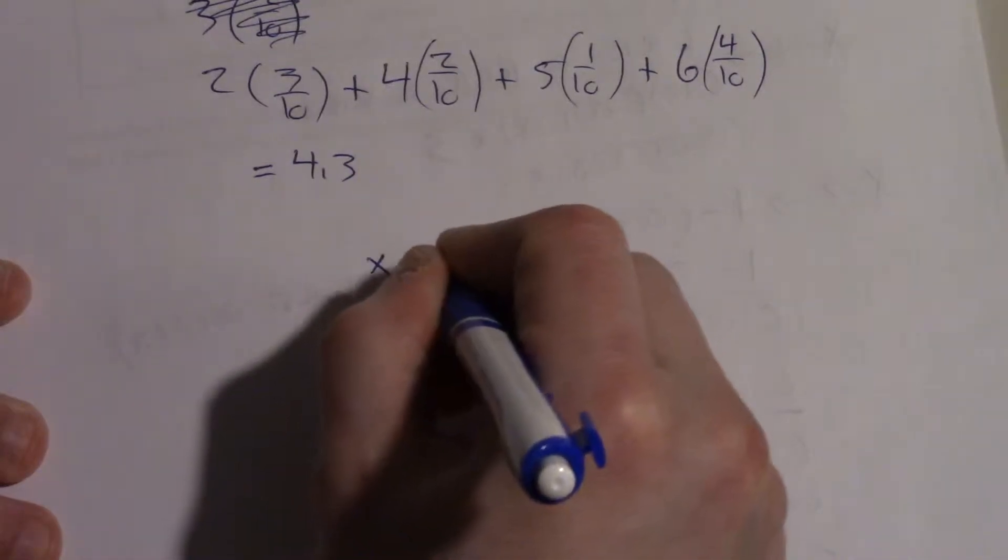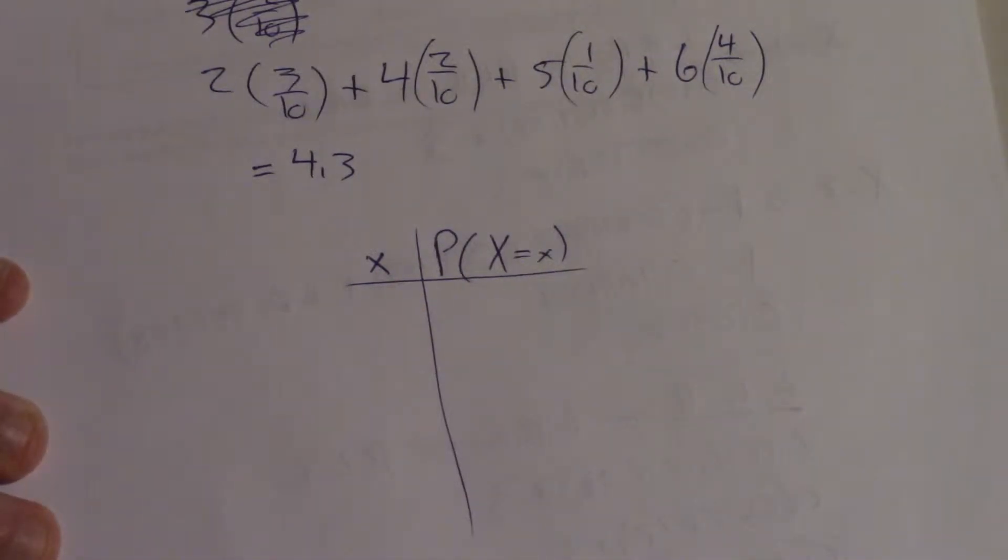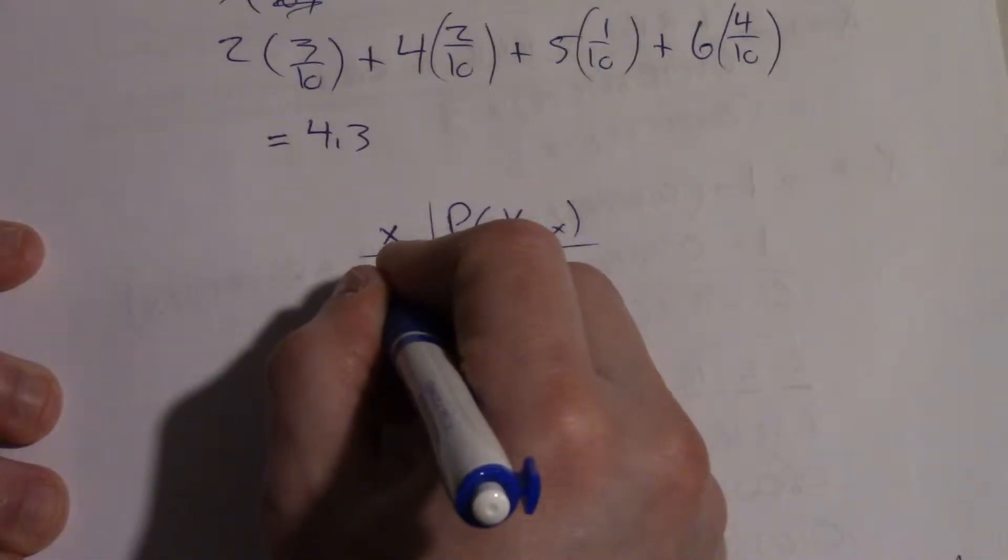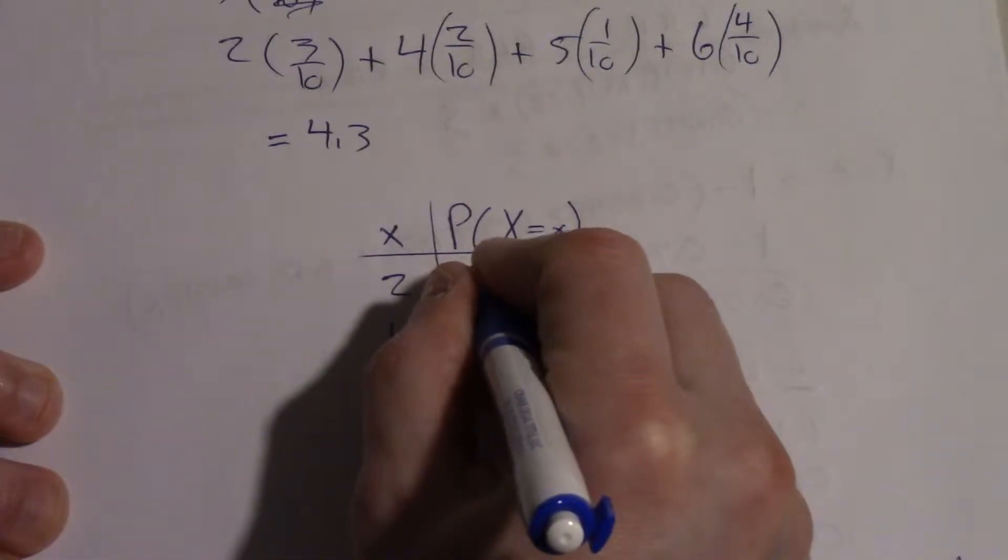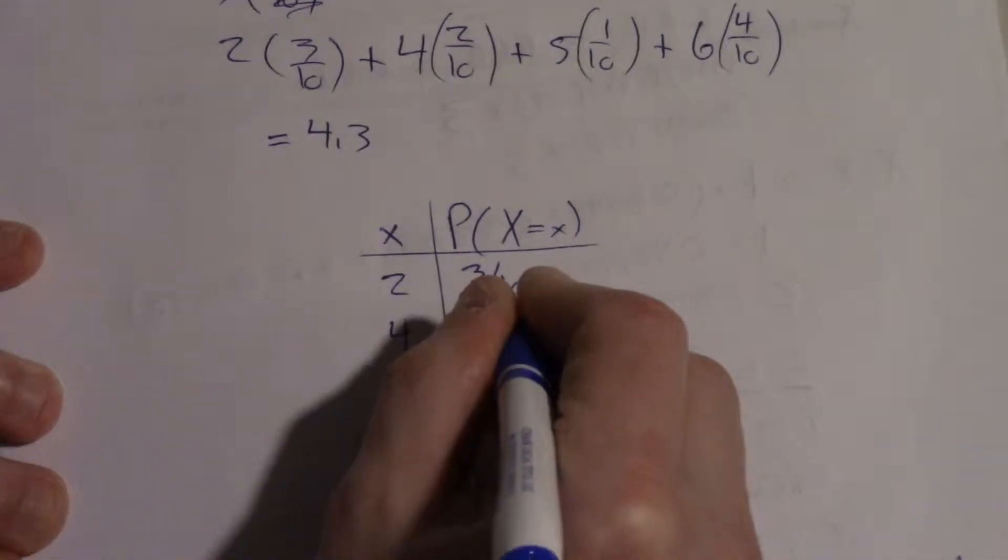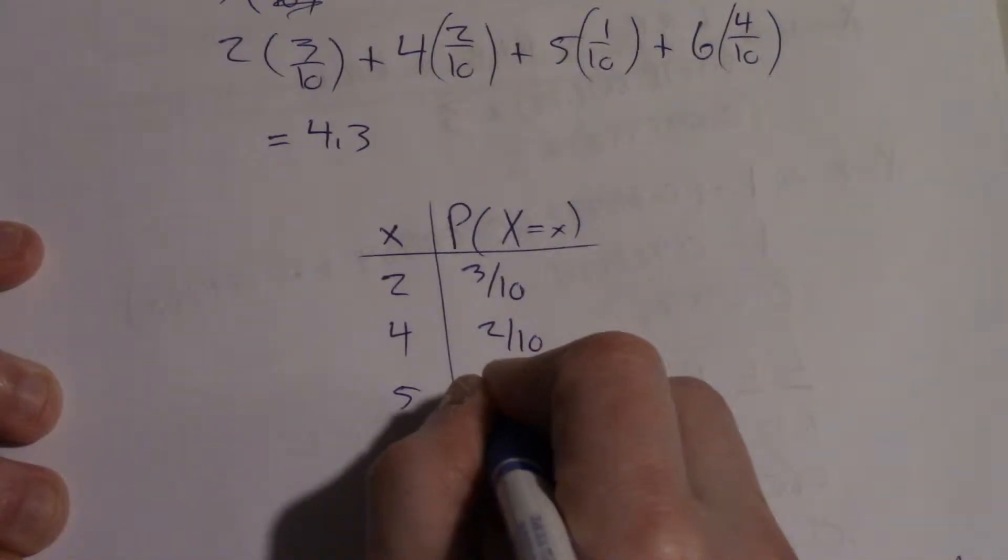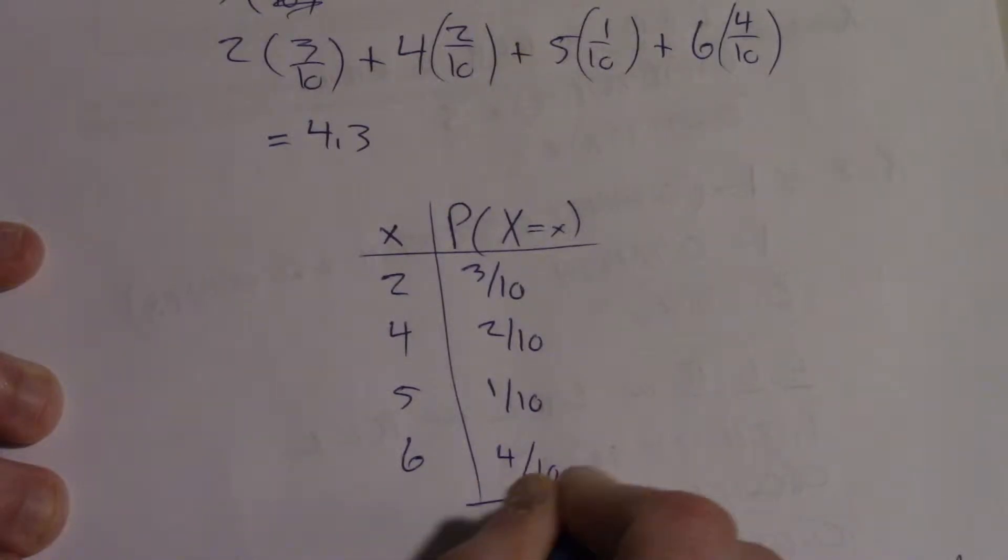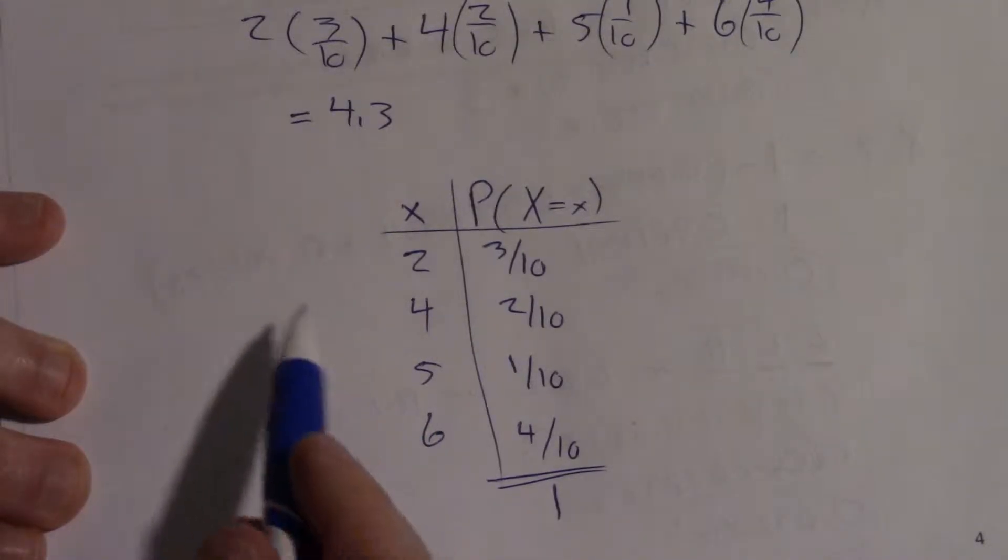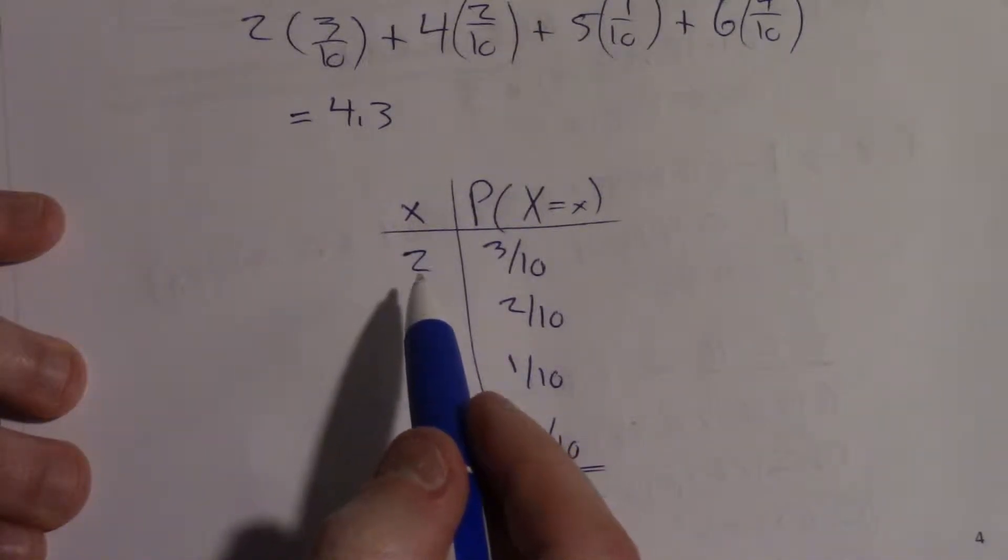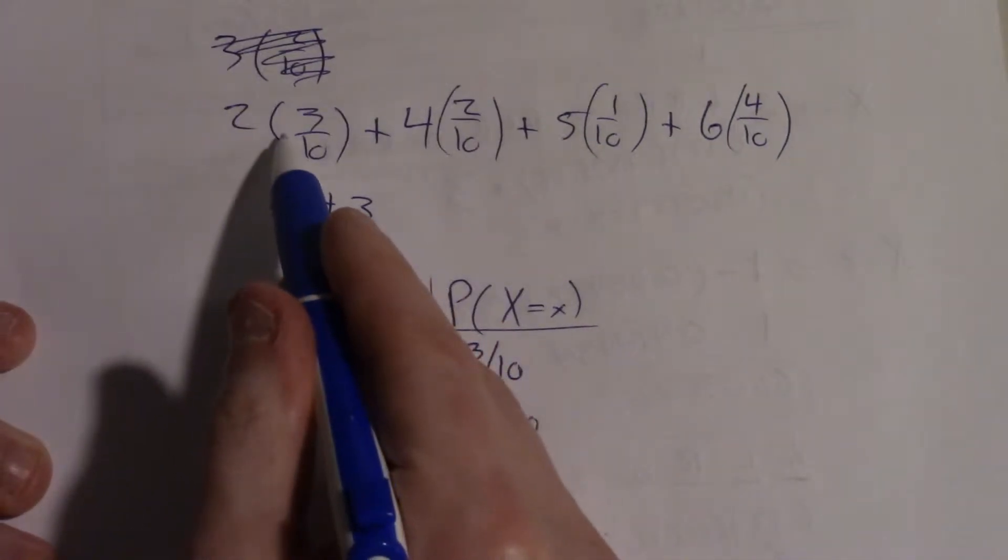So if we drew the probability distribution, the little x is the values that we could observe in the population. So 2, 4, 5, and 6. And what we were told is we had 3 of the 10 values would be a 2, 2 of the 10 would be a 4, 1 of the 10 would be a 5, 4 of the 10 would be a 6. And those all add up to 1. So what this new equation for the mean is saying is it says take each value, multiply it by its probability, and then add them all up. And this is what we did here.